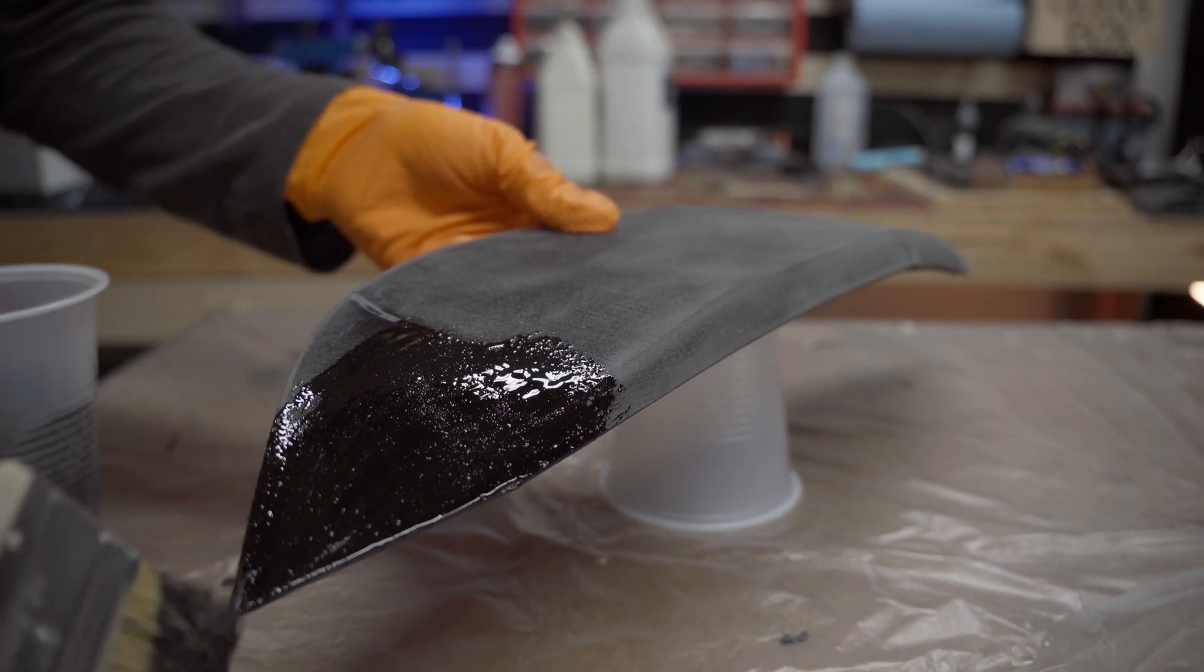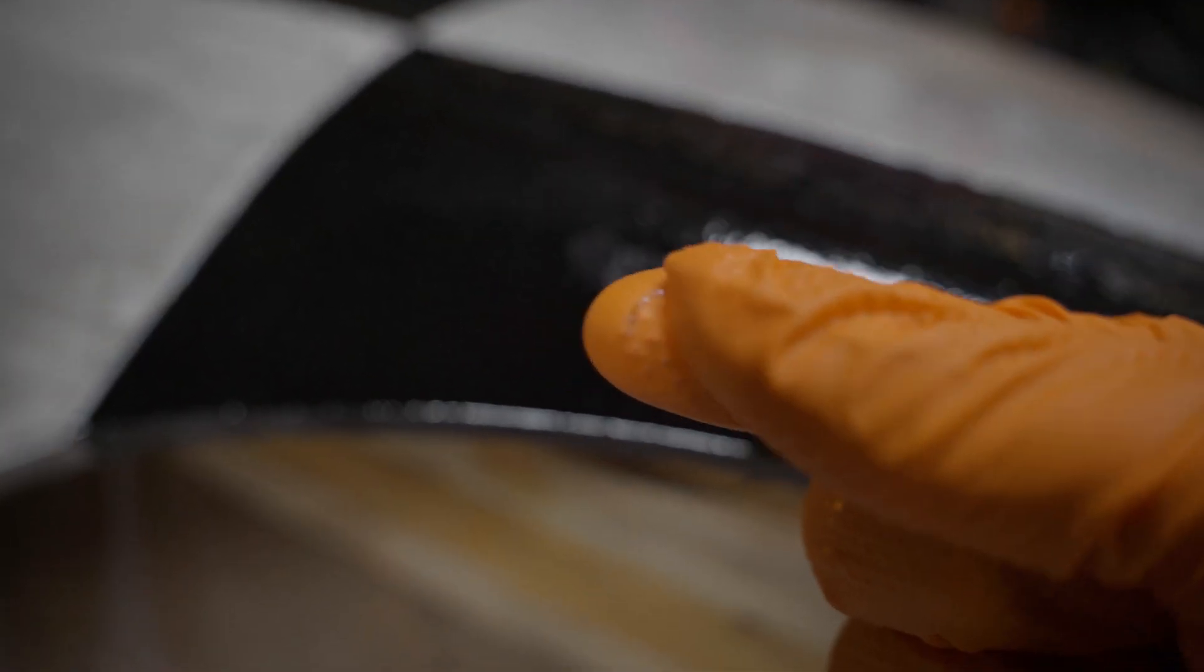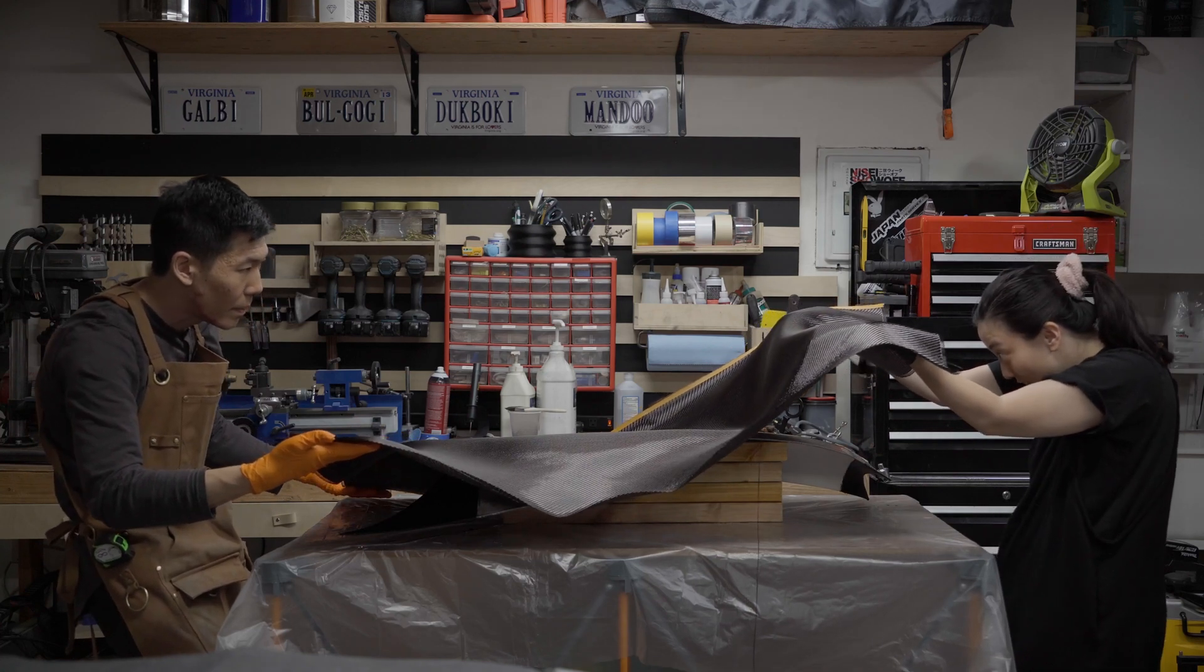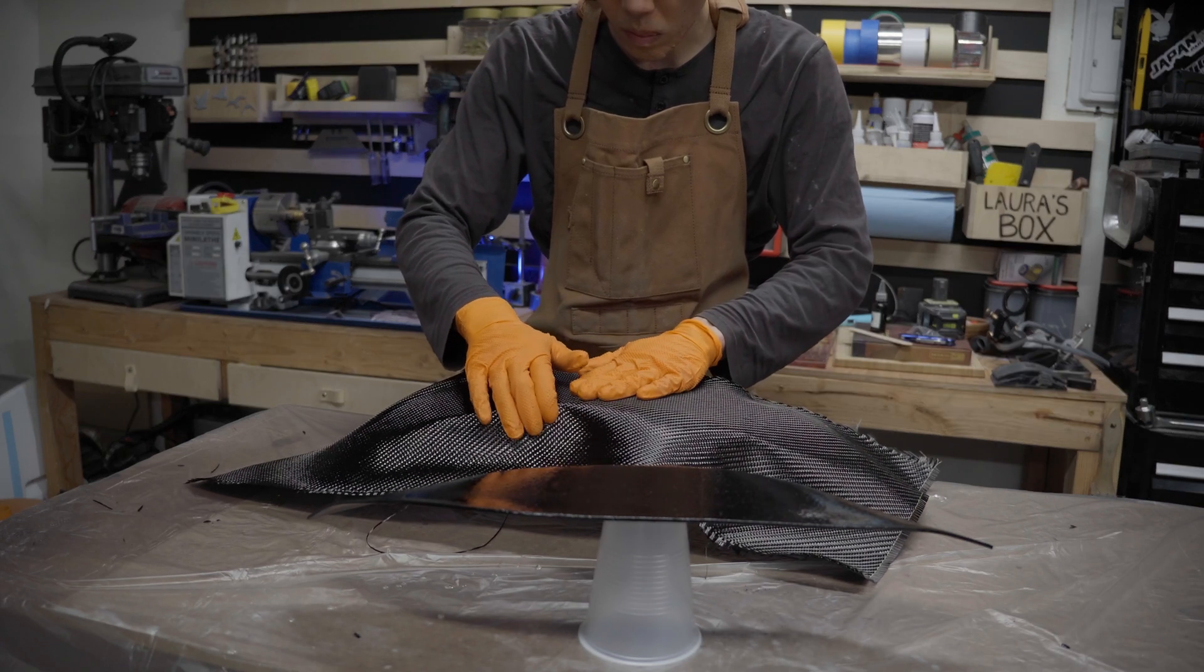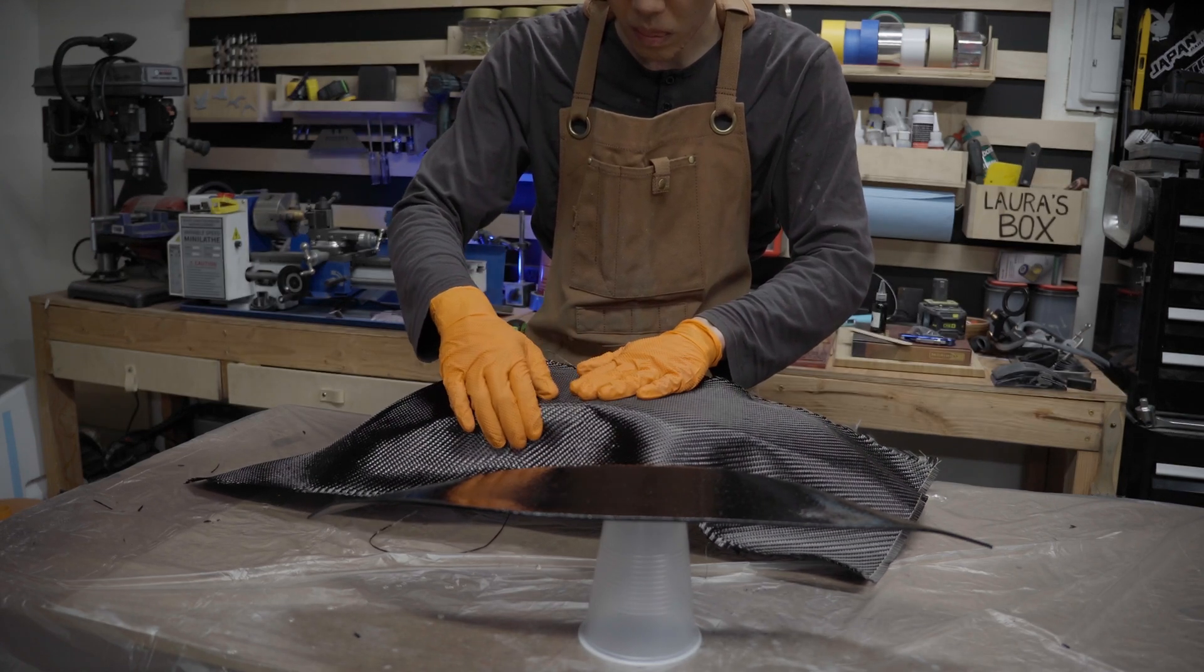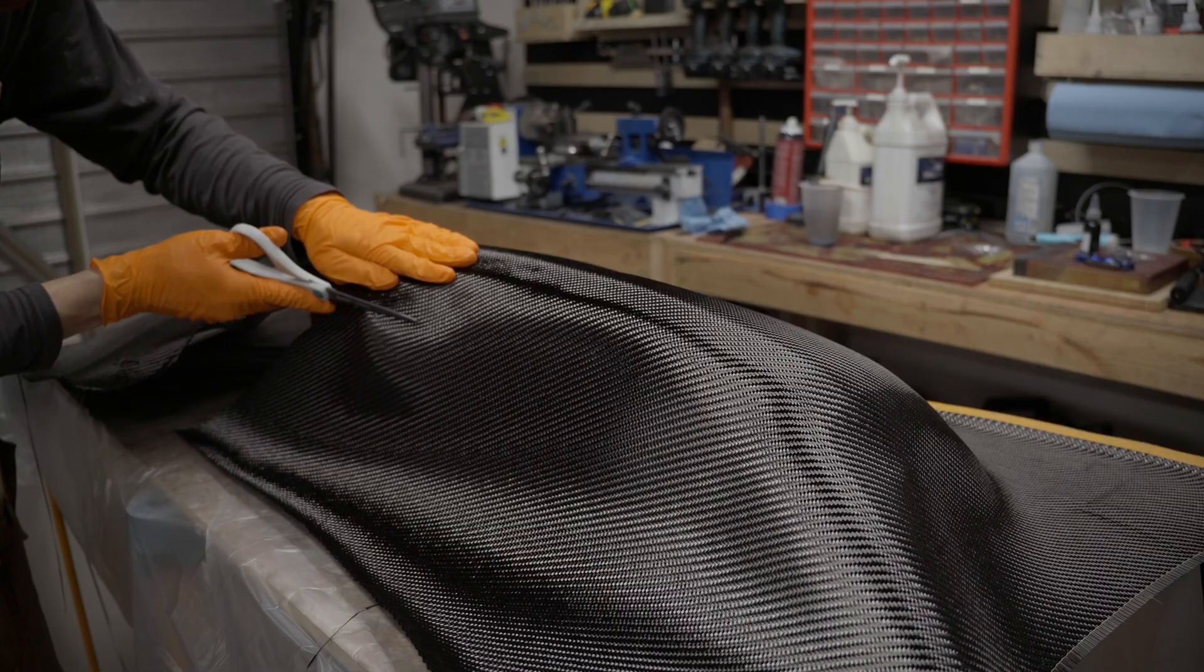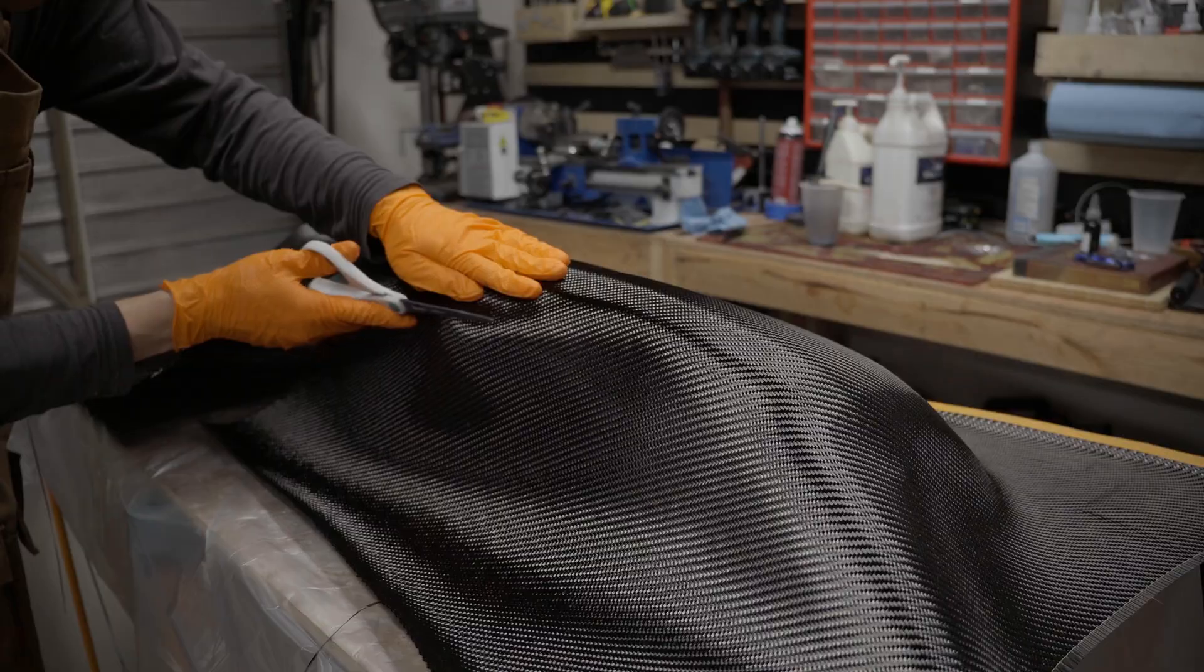I let this coat dry for about one and a half hours until it got tacky, but didn't transfer to my finger. Then with Laura's help, we laid the carbon fiber cloth gently on top, and smoothed it out making sure to get all the edges. After cutting off the excess cloth, I put a heavy wet coat of epoxy on top and let it cure overnight.